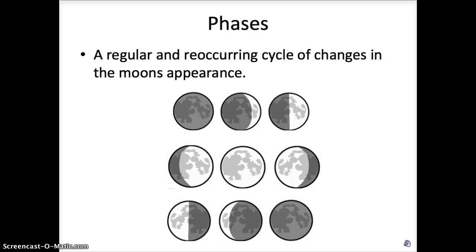Phases are a regular and reoccurring cycle of changes in the moon's appearance. We will learn more about the specific phases later, but here are some pictures of phases that you may have seen before.